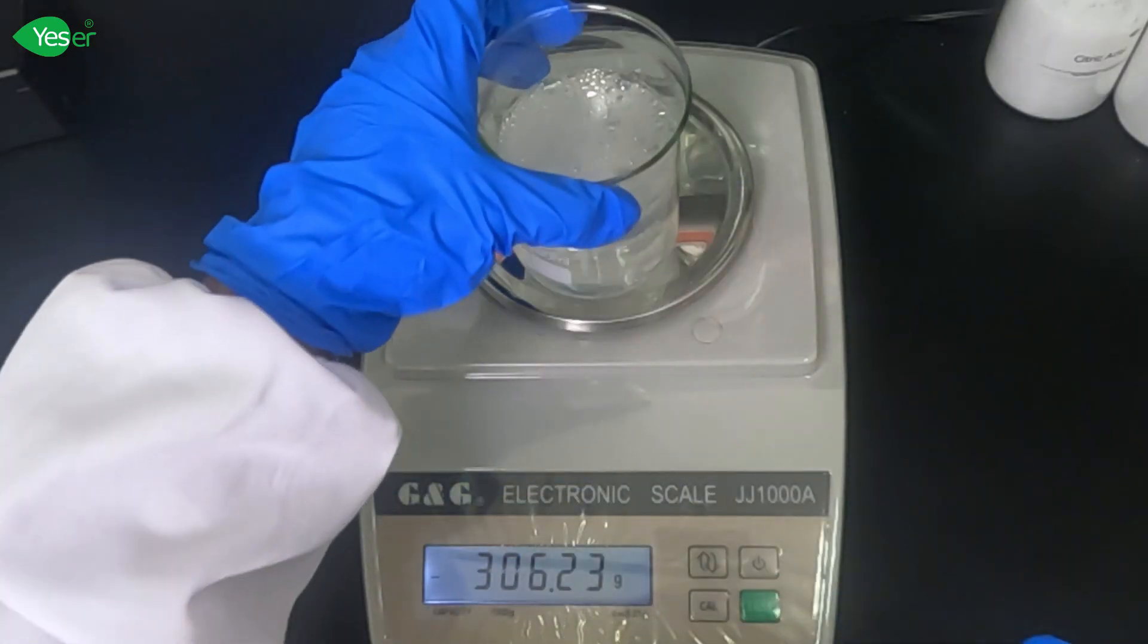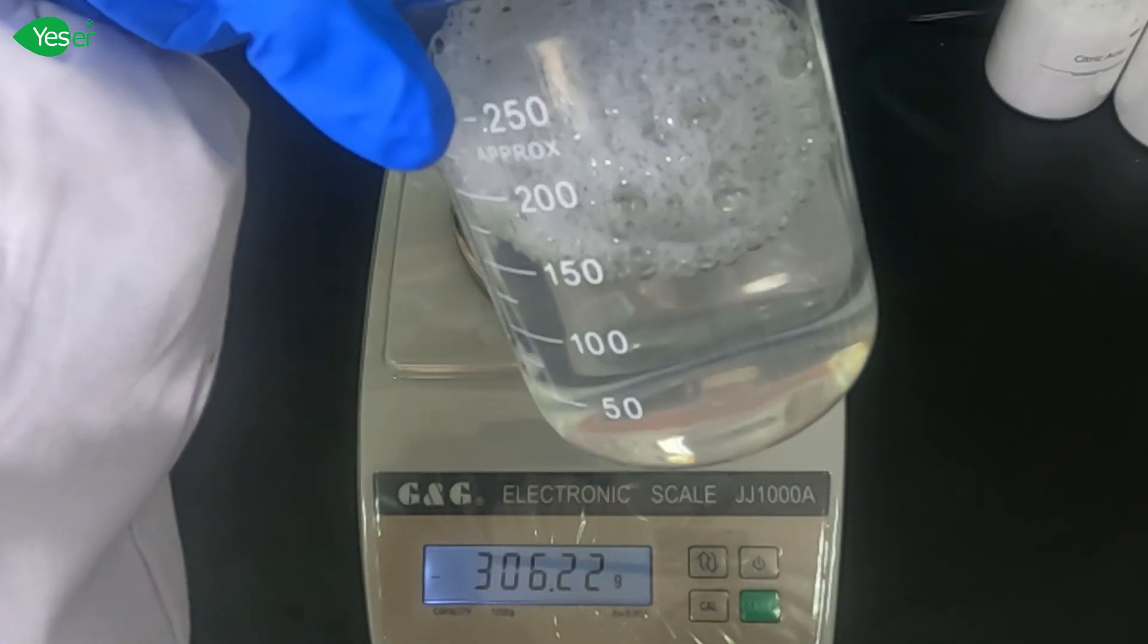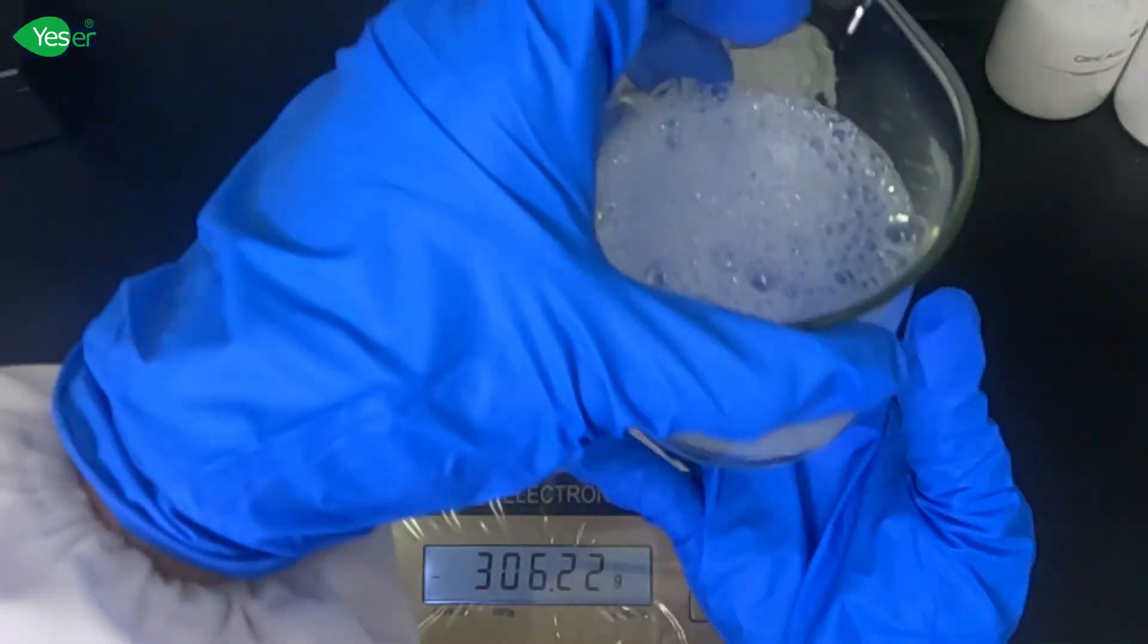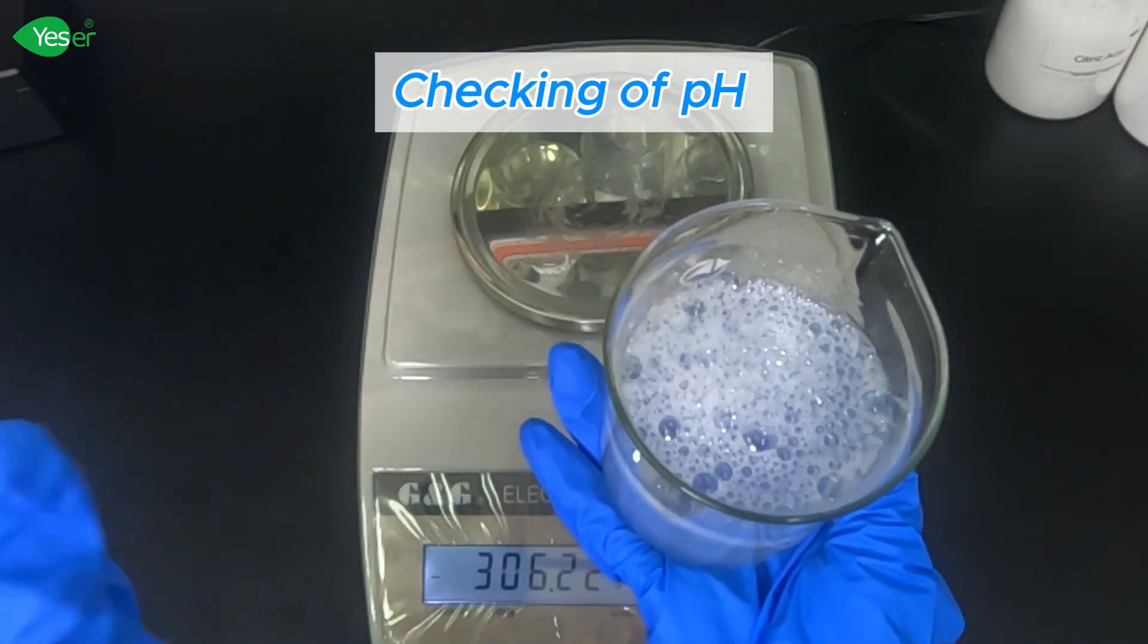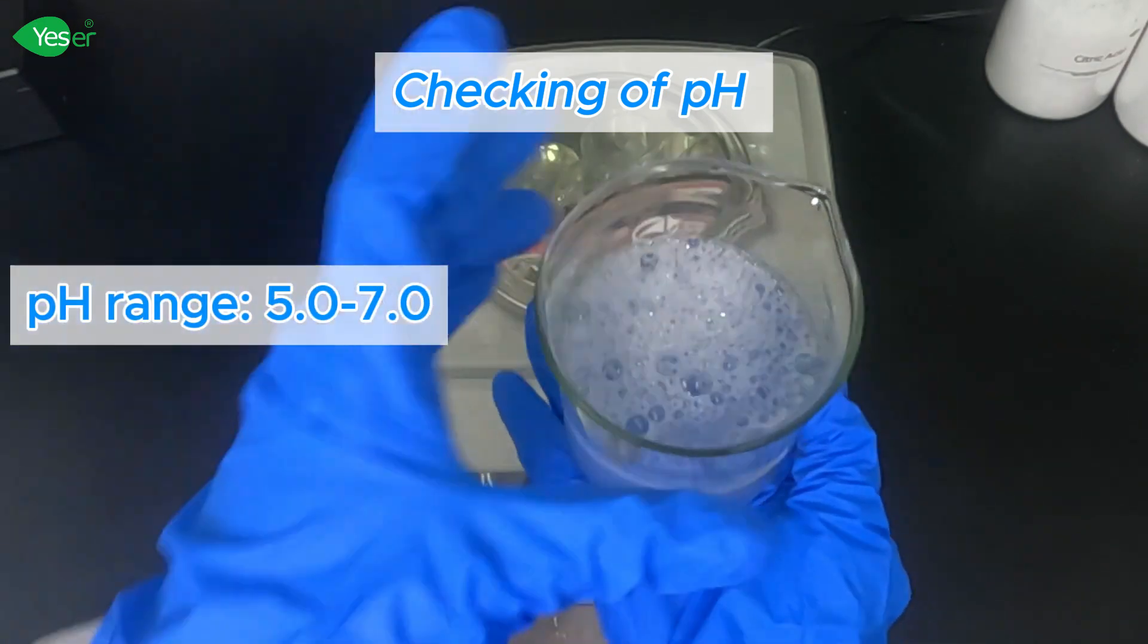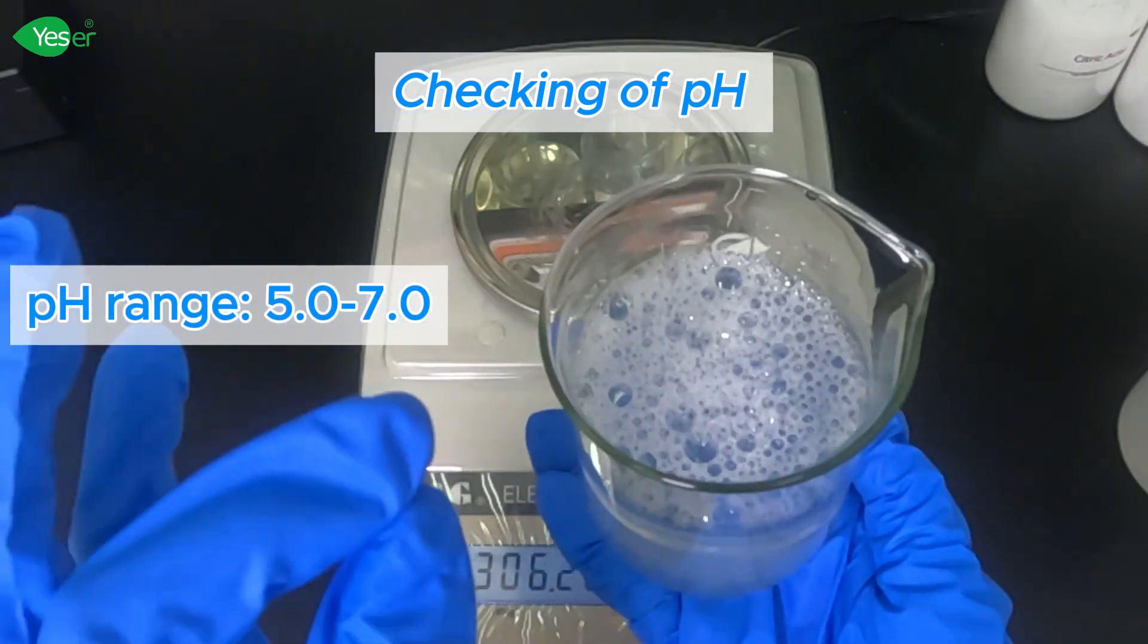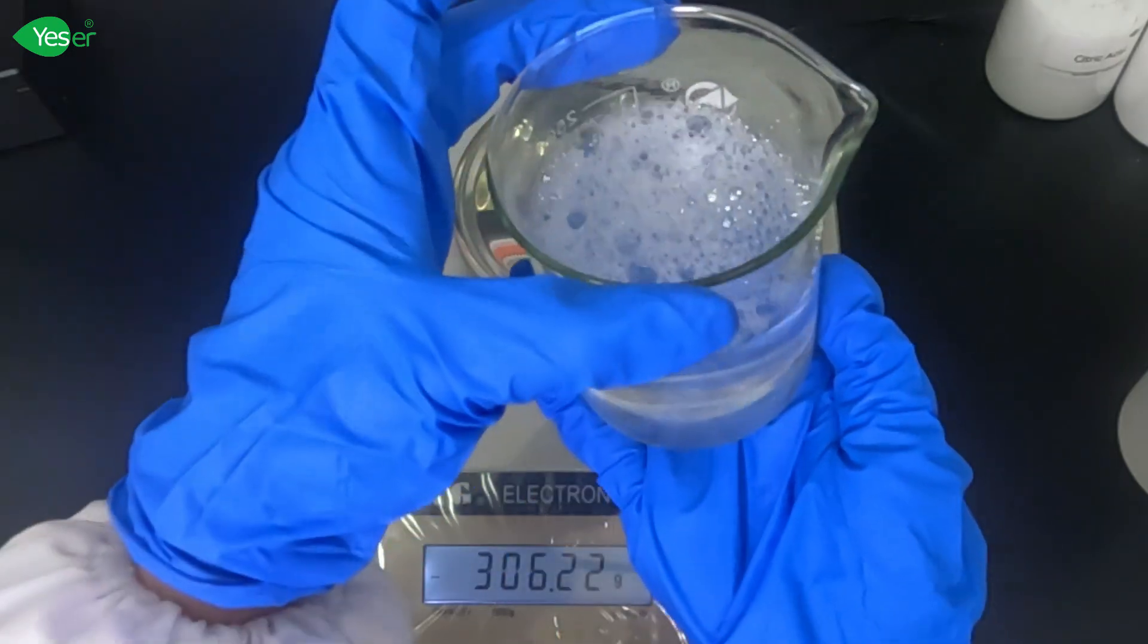Now that we have added all our ingredients, we will now check the pH of this solution. Our pH range should be between 5 and 7. We will adjust the pH of the solution using citric acid if it's not within the range.